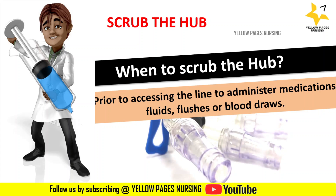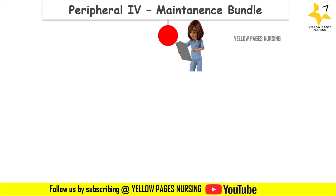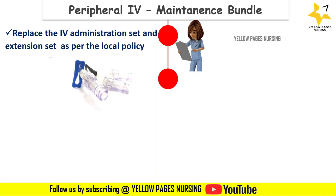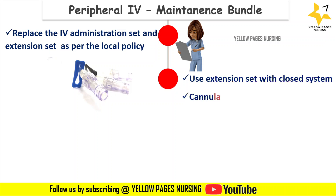In the maintenance bundle, replace the IV administration set and extension set as per local policy. In cases of blood administration and total parenteral nutrition administration, the administration set should be discarded immediately; other administration sets as per institutional policy. Use extension sets with a closed system. Cannula replacement is at 72 hours or as clinically indicated, or as per institutional policies. Flush the line before and after injections.